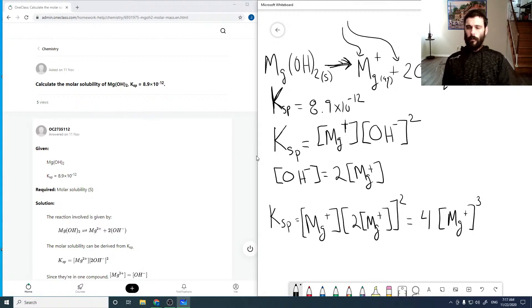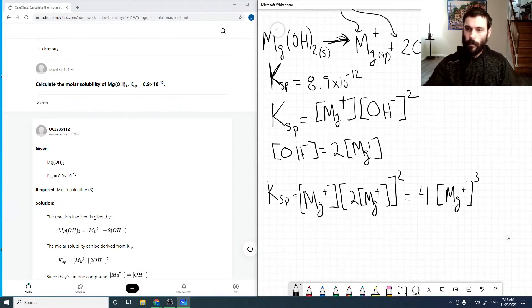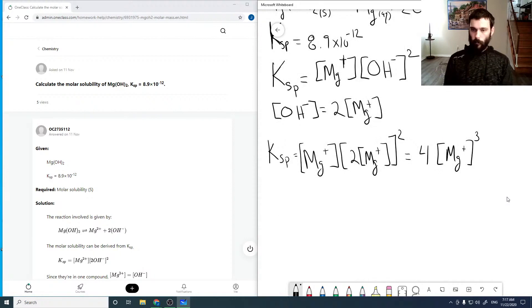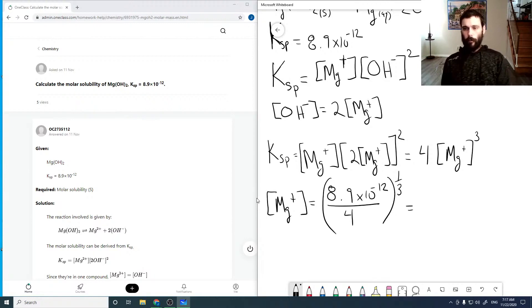And so now we're in a pretty good place to solve for our ion concentration, and now we can see that our magnesium plus concentration is just our Ksp, which is 8.9 times 10 to the minus 12 over 4, to the cube root, and so if we put that in a calculator, we will find that that's 1.3055 times 10 to the minus 4.